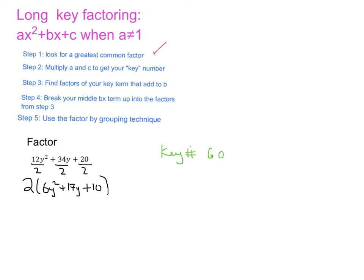And now what we want to do, so we found our key number, step 3 says go ahead and find factors of your key term that add to b. So we want this to add to 17. I'll make a note over here, so we want this to add to 17.